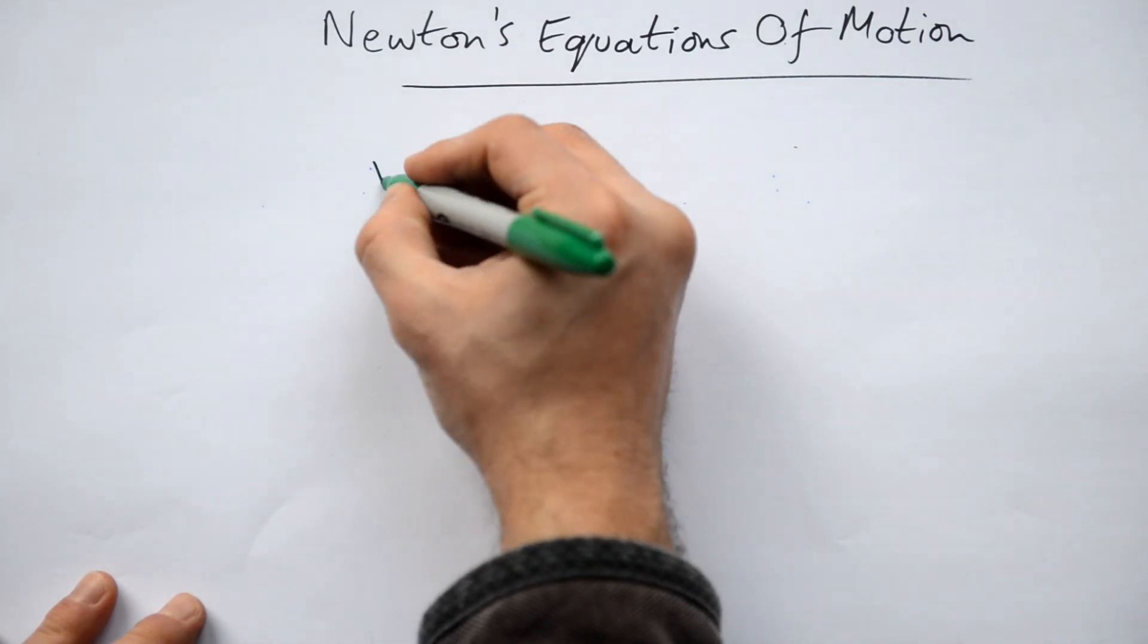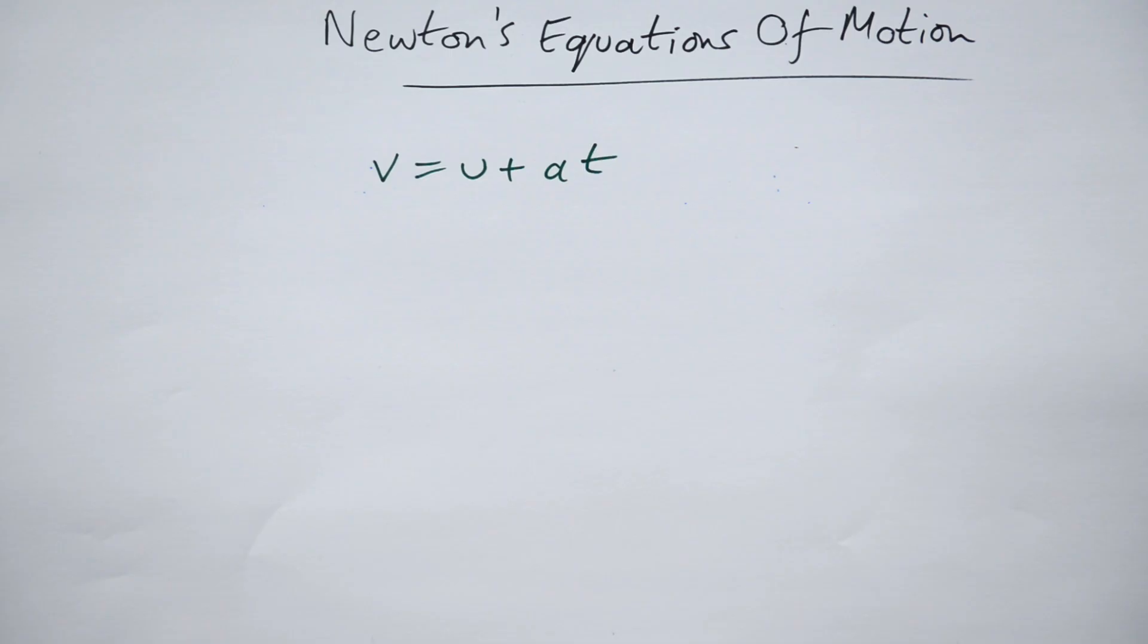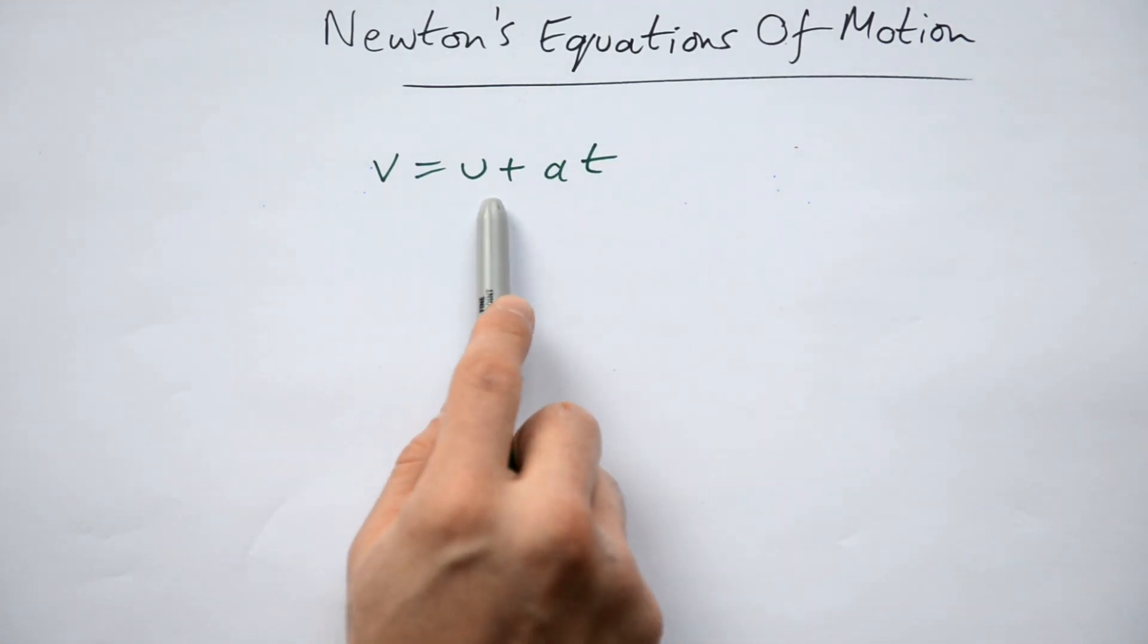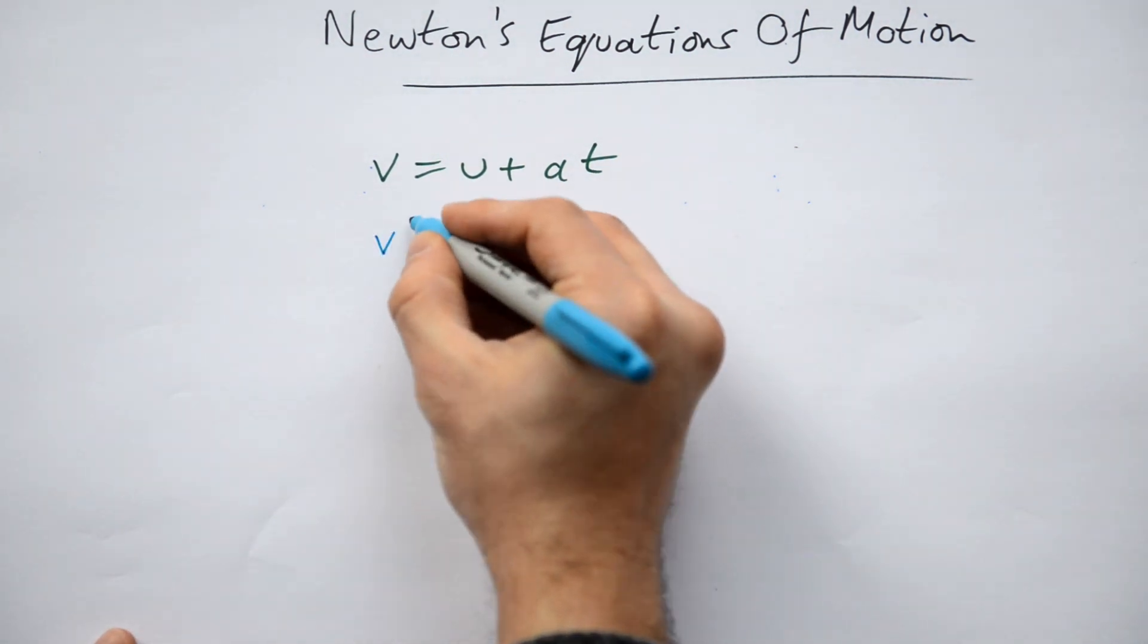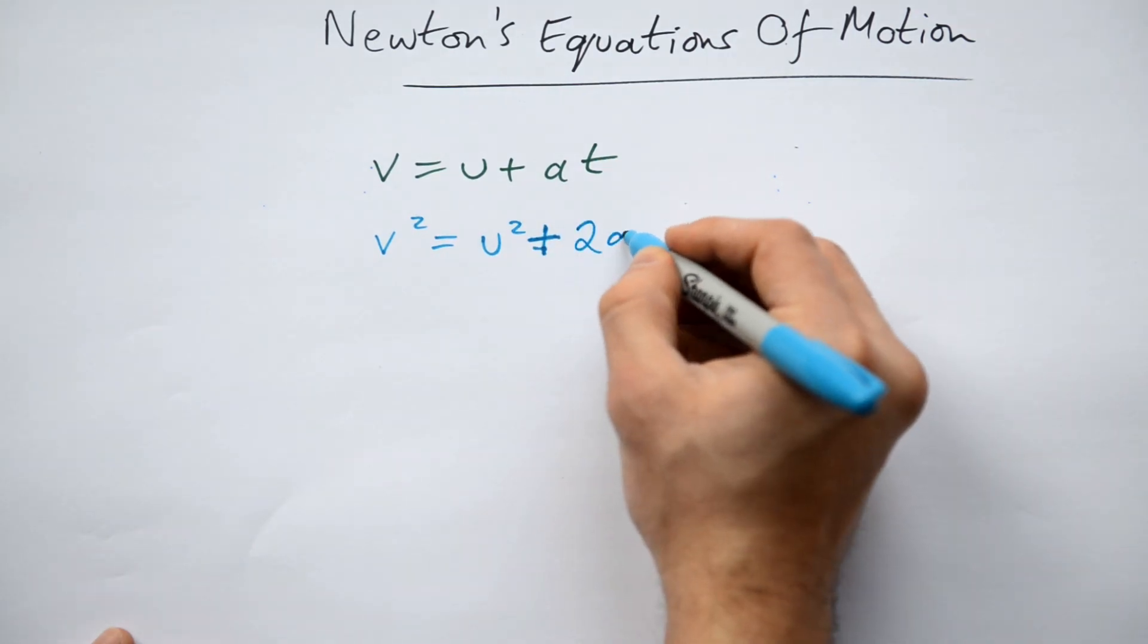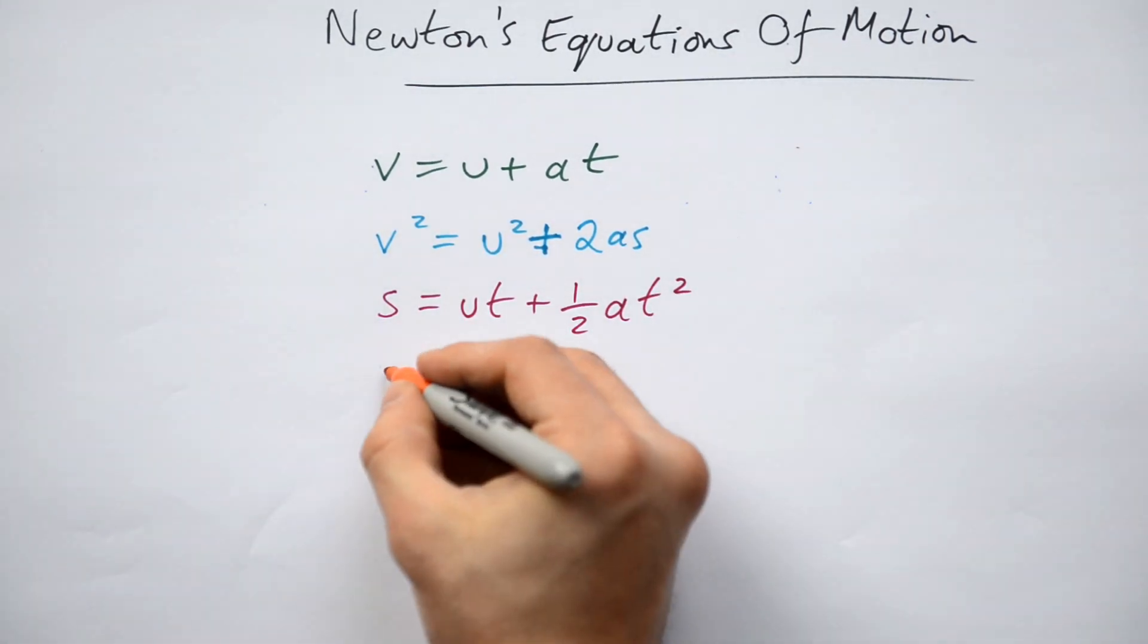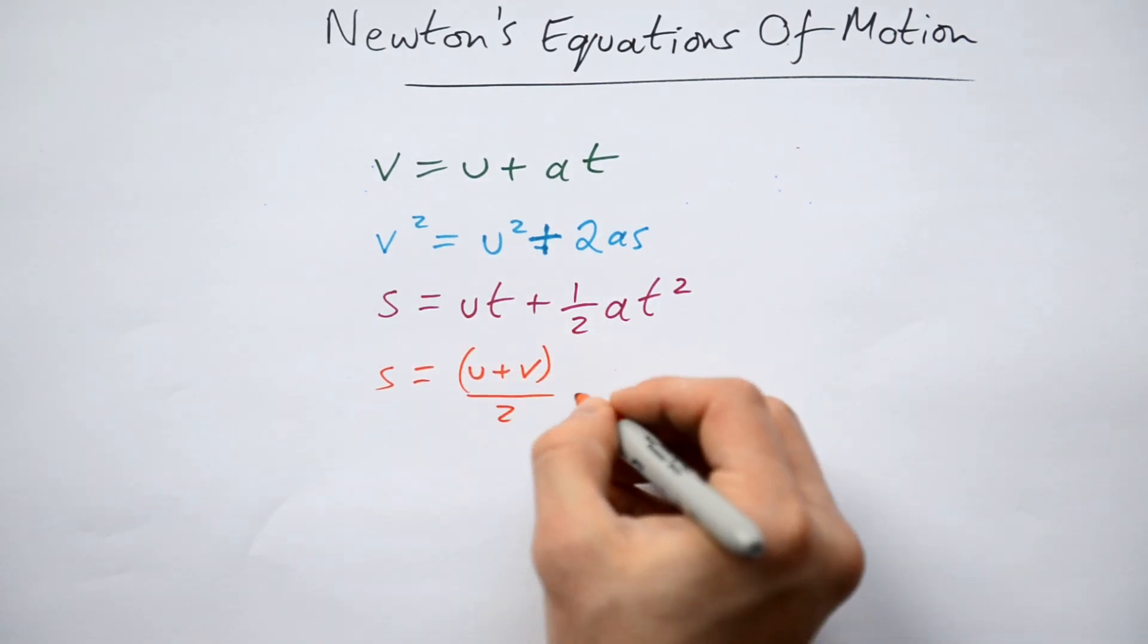Here's the first one, V equals U plus AT. So that's the final velocity is equal to the initial velocity plus the acceleration times the time. That makes sense, doesn't it? It's just final speed equals initial speed plus the gain in speed. Next one is V squared equals U squared plus 2AS. Next one, S equals UT plus half A T squared. And finally, S equals U plus V divided by 2 times T.